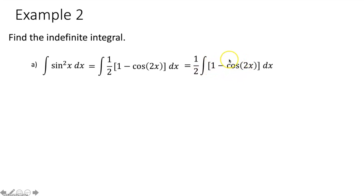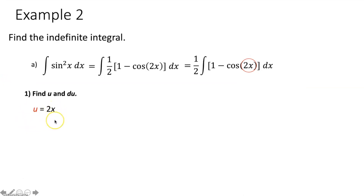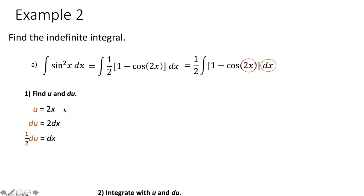We integrate each term separately. For cosine of 2x, we have a function within a function, so we use u substitution. Set u equal to the innermost function, 2x. Then du/dx equals 2, so du equals 2 dx. There's no 2 in the problem, so we divide: one half du equals dx. We rewrite the integral substituting u for 2x and one half du for dx. Move the one half constant out front to multiply with the other one half.